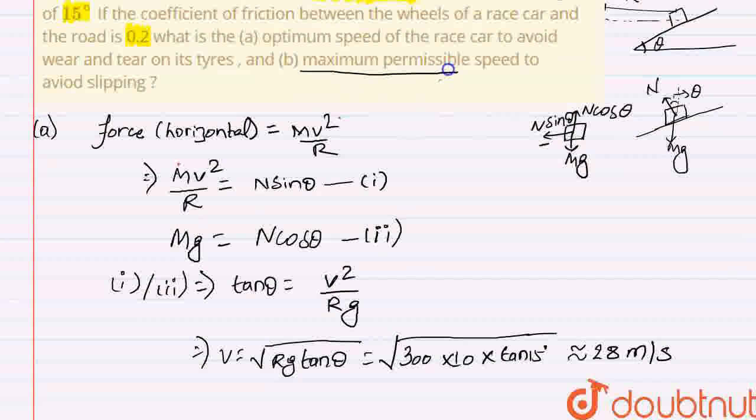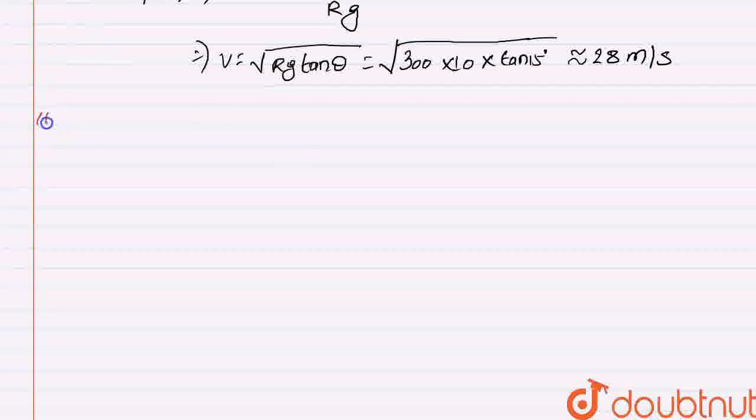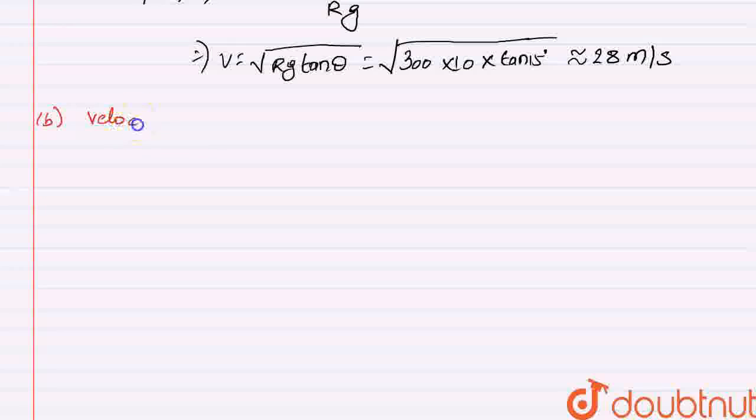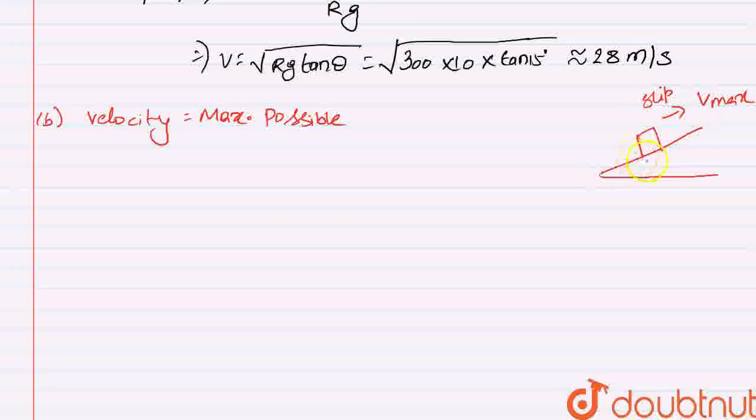In part B, it is asking maximum permissible speed to avoid slipping. So in this case, that is in part B, given that velocity is maximum, velocity is maximum possible. So this is the race track, this is the car. And for V max, the slipping condition will be the car will slip upward, that is slip upward, and thus the frictional force will act downward. This is the frictional force. And as you can see, if this angle is theta, this angle will also be theta. And the FBD of the block will be like this, mg downward.